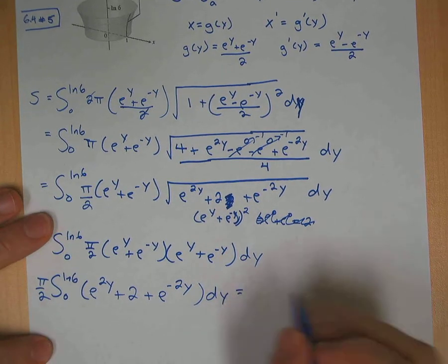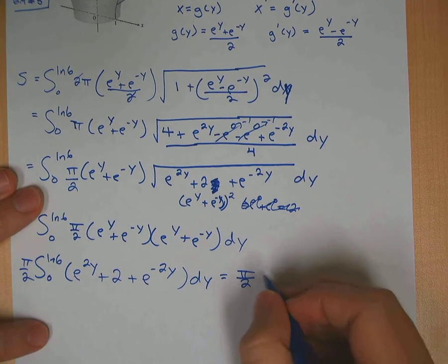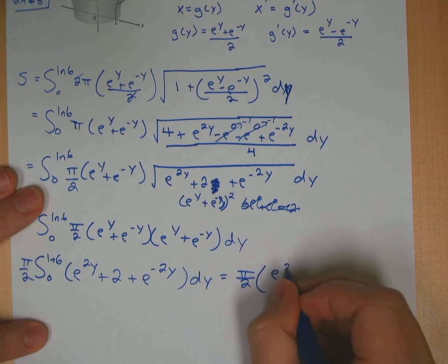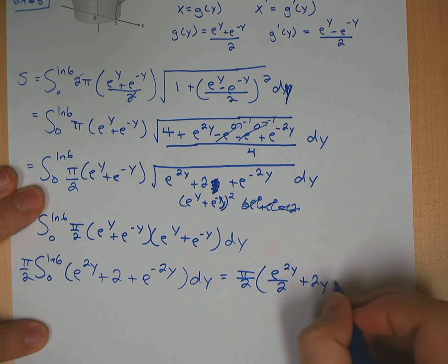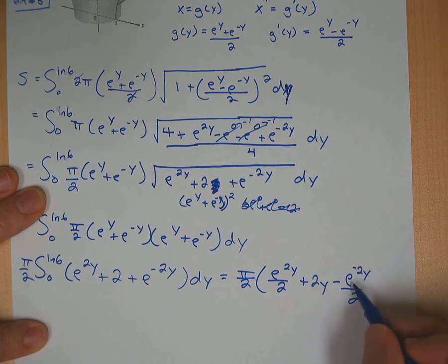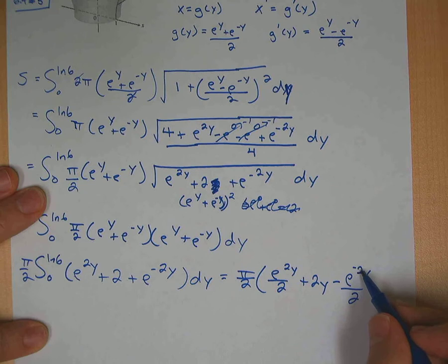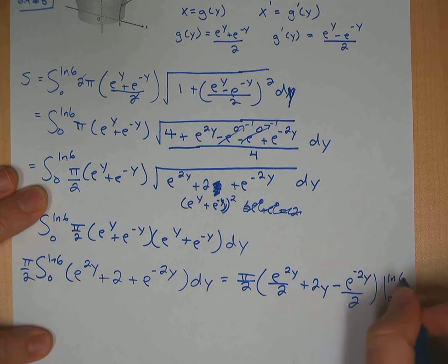Now, I'm going to integrate. Okay, so when we integrate, we get e to the 2y over 2 plus 2y minus e to the negative 2y over 2. The minus comes from the fact that this was negative. So there's the negative 2. All integrated from 0 to ln of 6.